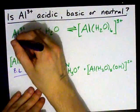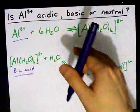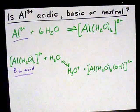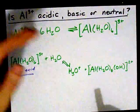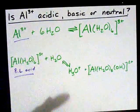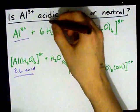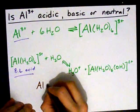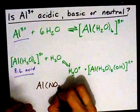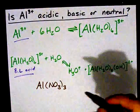Thus, Al 3 plus, when it's dissolved into water, as long as the other part of the salt isn't more basic than this is acidic, will create an acidic solution. Al NO3, for example, will give you an acidic solution.